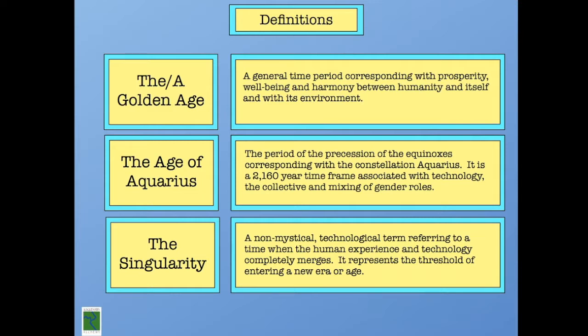The third definition is the singularity. This is a non-mystical, technological term, generally referring to a time period where the human experience and technology merges. But I'm going to suggest, and we're going to get into this in the last section of this presentation, the singularity is more of a threshold. What it represents is when we fully cross over into this age of Aquarius and hopefully a golden age.